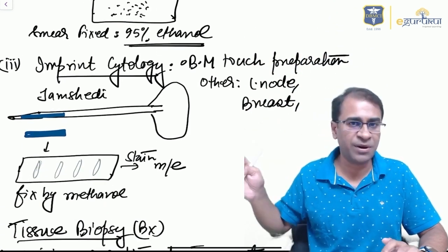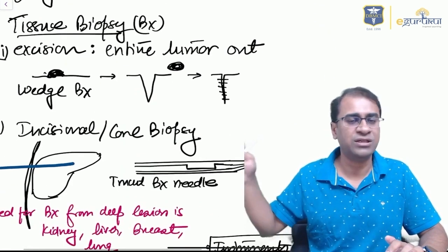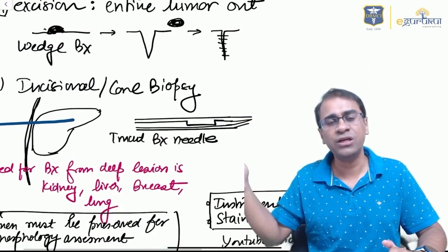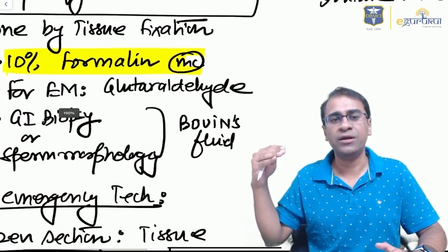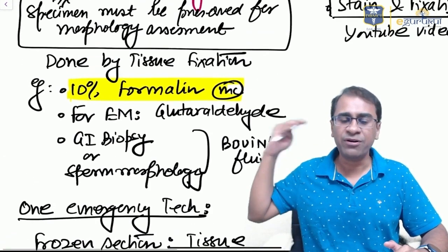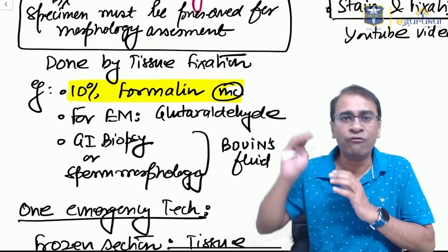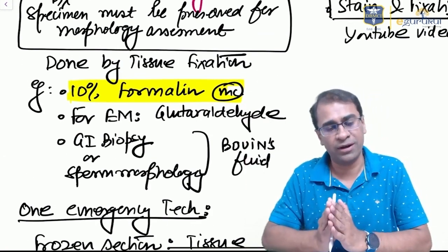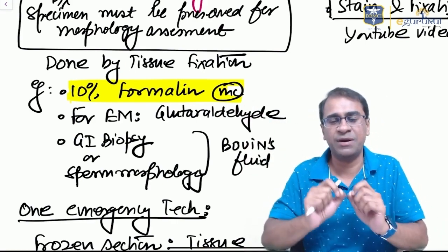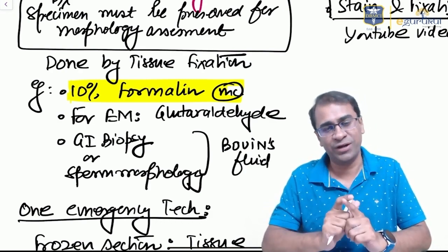You can do imprint cytology like a bone marrow touch preparation, or you can do an actual biopsy using wedge biopsy, incisional biopsy, or core biopsy. Very importantly, you can do a frozen section examination. But remember, when you do a biopsy, you have to fix it using 10% formalin. For electron microscopy, use glutaraldehyde. For GI or sperm morphology assessment, use Bouin's fluid. This is very important.